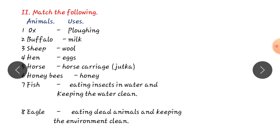Now, I am showing you animals and uses. Ox helps for plowing. Buffalo gives us milk. Sheep, wool. Hen, eggs. Horse, jet car or horse carriage. Honey bees, honey. Fish, eating insects in water and keeping the environment clean. And eagle, eating dead animals and keeping the environment clean.